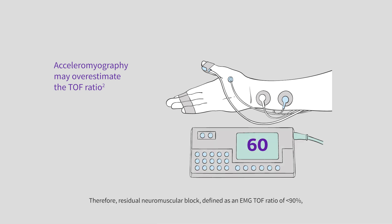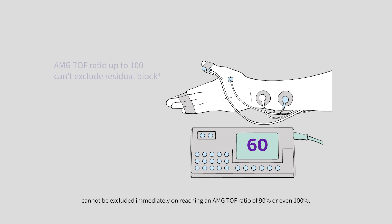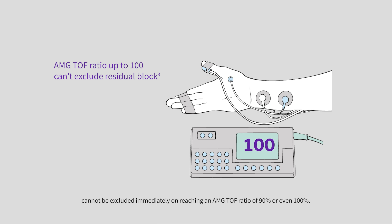Therefore, residual neuromuscular block, defined as an EMG TOF ratio of less than 90%, cannot be excluded immediately on reaching an AMG TOF ratio of 90% or even 100%.